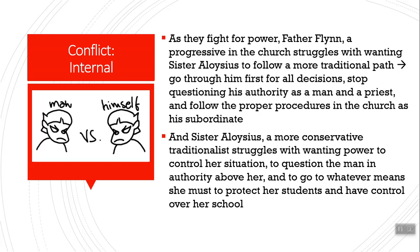So does Sister Aloysius. She's a more conservative traditionalist, but she wants more power to control her situation — she wants to question the man in authority above her and go to whatever means she has to in order to have more control over her school and her students. Those are post-Vatican II things. After Vatican II, women had more power; a nun like Sister Aloysius would have been allowed to run her school however she saw fit and might not have had to answer to the priest. So on one hand she wants that power and authority, but because of her gender she's held back. She's conservative but trapped by her own beliefs as well — which is absolutely fascinating.